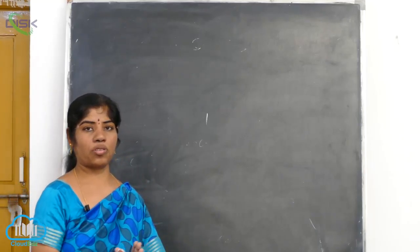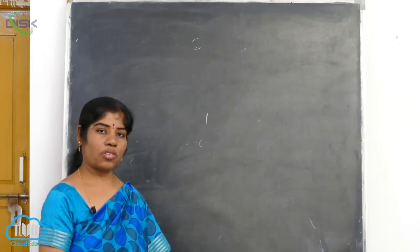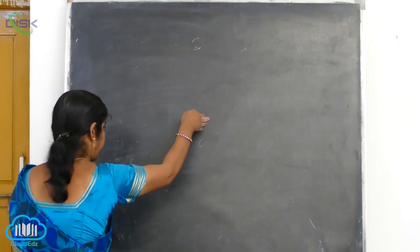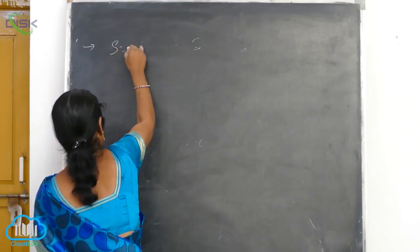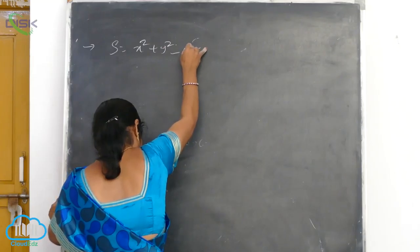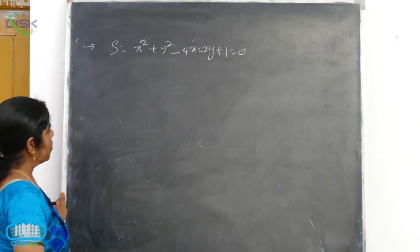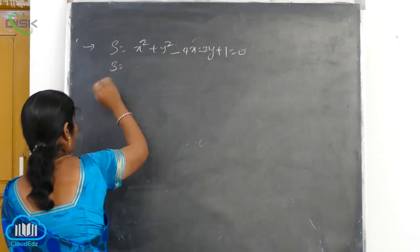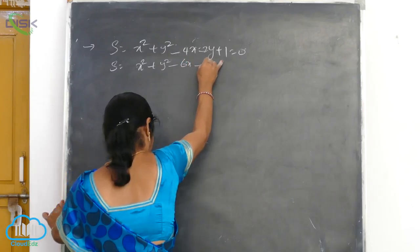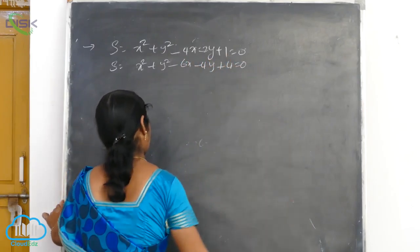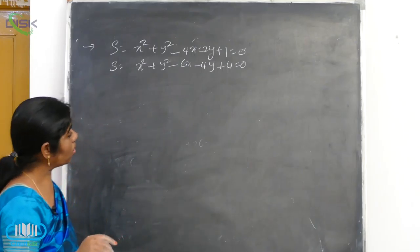C1C2 is equal to R1 plus R2. We need to apply here. So, if we have 2 circles, we will change this circle. We have x squared plus y squared minus 4x minus 2y plus 1 is equal to 0, and x squared plus y squared minus 6x minus 4y plus 4 is equal to 0. We will change these 2 circles to the center-radius form.